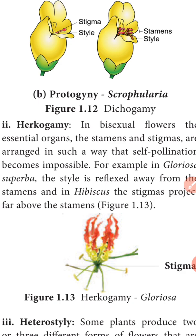The style is reflexed away from the stamen — the style bends to one side and the male part is on the opposite side, the female on the other side. So they are reflected away from one another. For example, Hibiscus rosa-sinensis: the male part is within the tube and the female part is long, extending beyond. This arrangement of flower position makes self-pollination impossible.